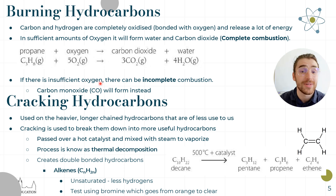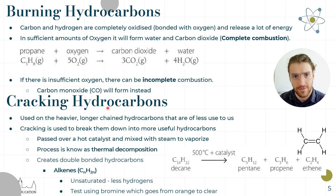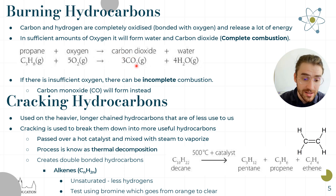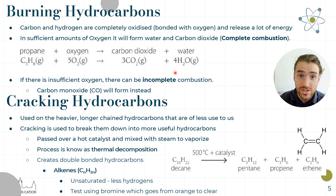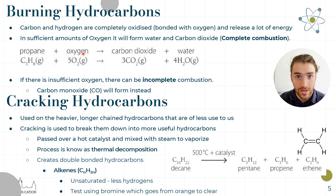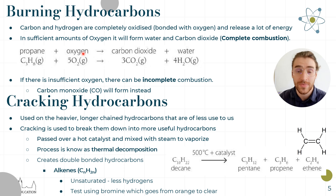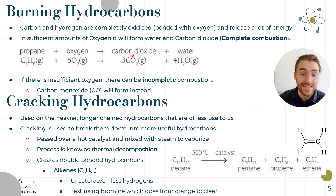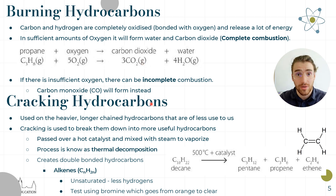If there is incomplete combustion — not enough oxygen — we're going to have carbon monoxide (CO) produced instead of CO2. Oxygen is still present, but there's not enough of it, so CO is formed rather than CO2. They will tell you in a question if it's complete or incomplete combustion: complete combustion produces CO2; incomplete combustion produces CO.